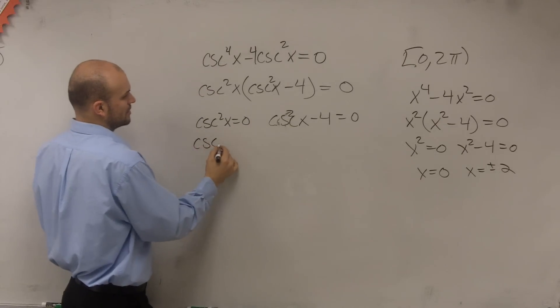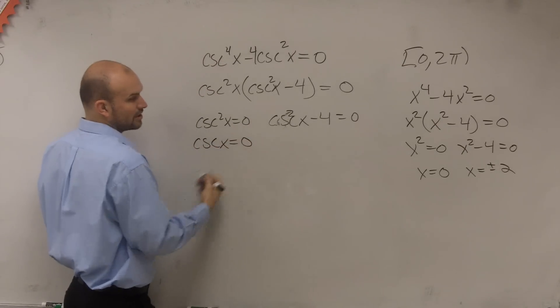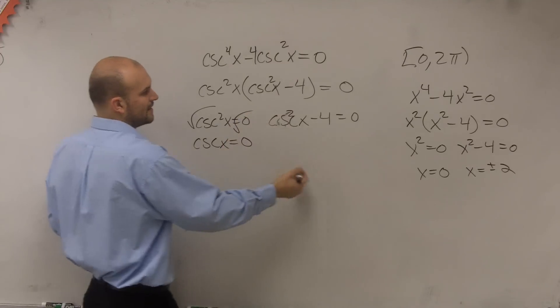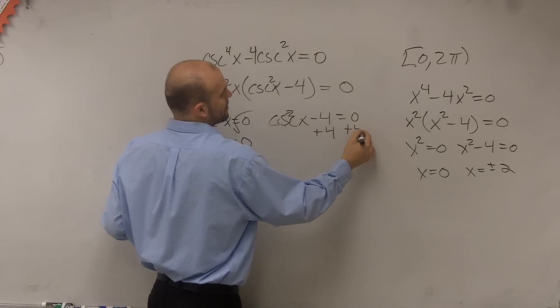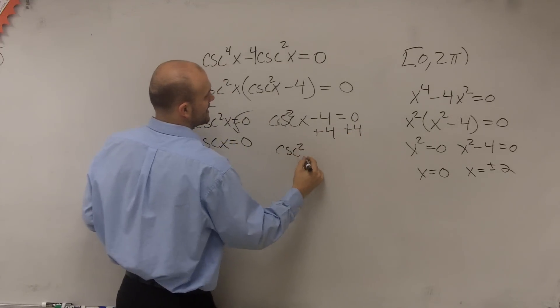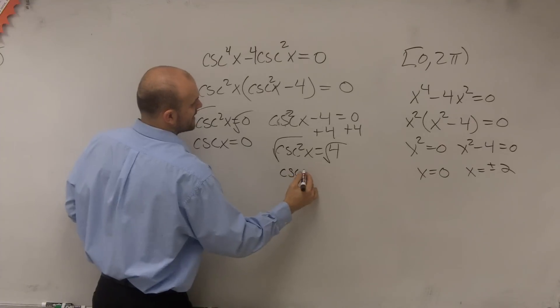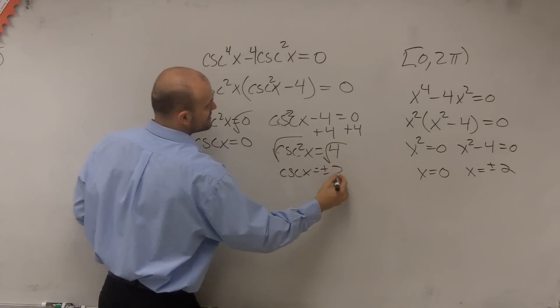Well, this just equals cosecant of x equals 0, right, as you solve. And then here, we add 4. Cosecant squared of x equals positive 4. Take the square root. And you can say, cosecant of x equals plus or minus 2.